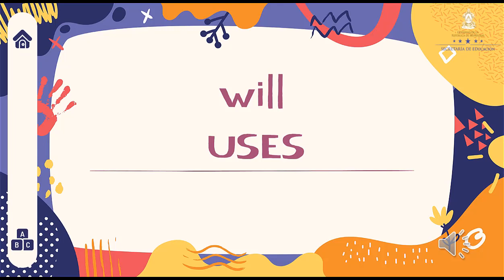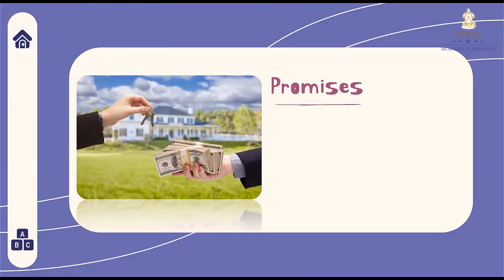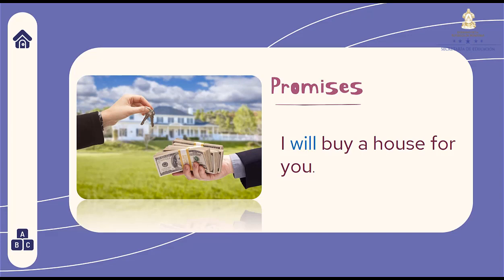Will uses. We already have clear that we use will when we talk about simple future. Ya tenemos claro que utilizamos will cuando hablamos de futuro simple. But there are some specific uses in some situations. One of the uses is to make promises. Uno de los usos es cuando hacemos promesas. For example: I will buy a house for you. Te compraré una casa para ti.